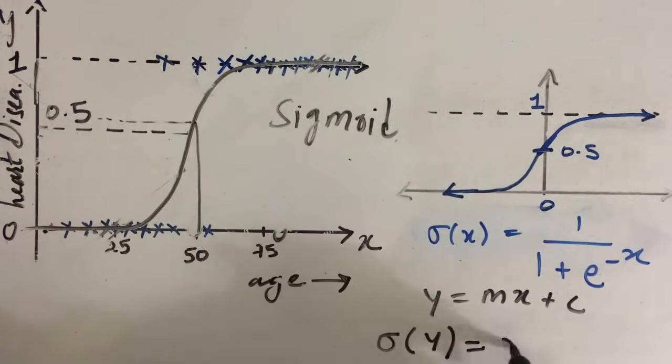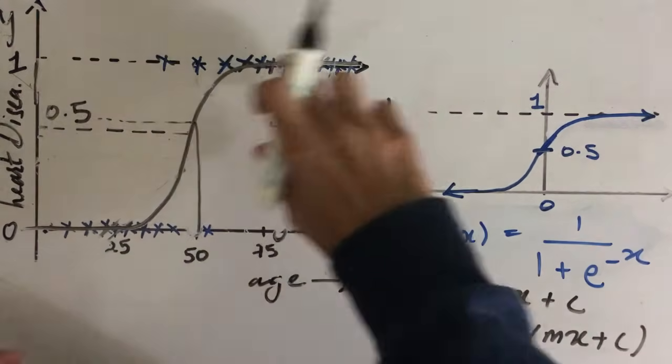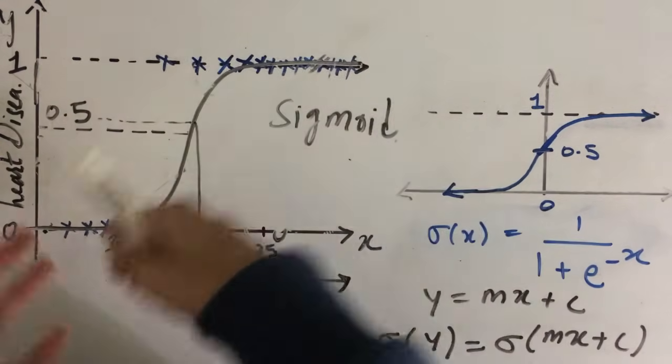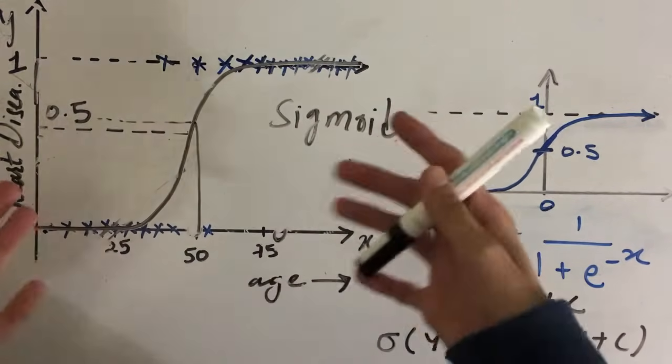So we will just apply sigmoid of y which will be sigmoid of mx plus c and we will get this curve. And that's how we plot a curve that fits best to our dataset and make our prediction.